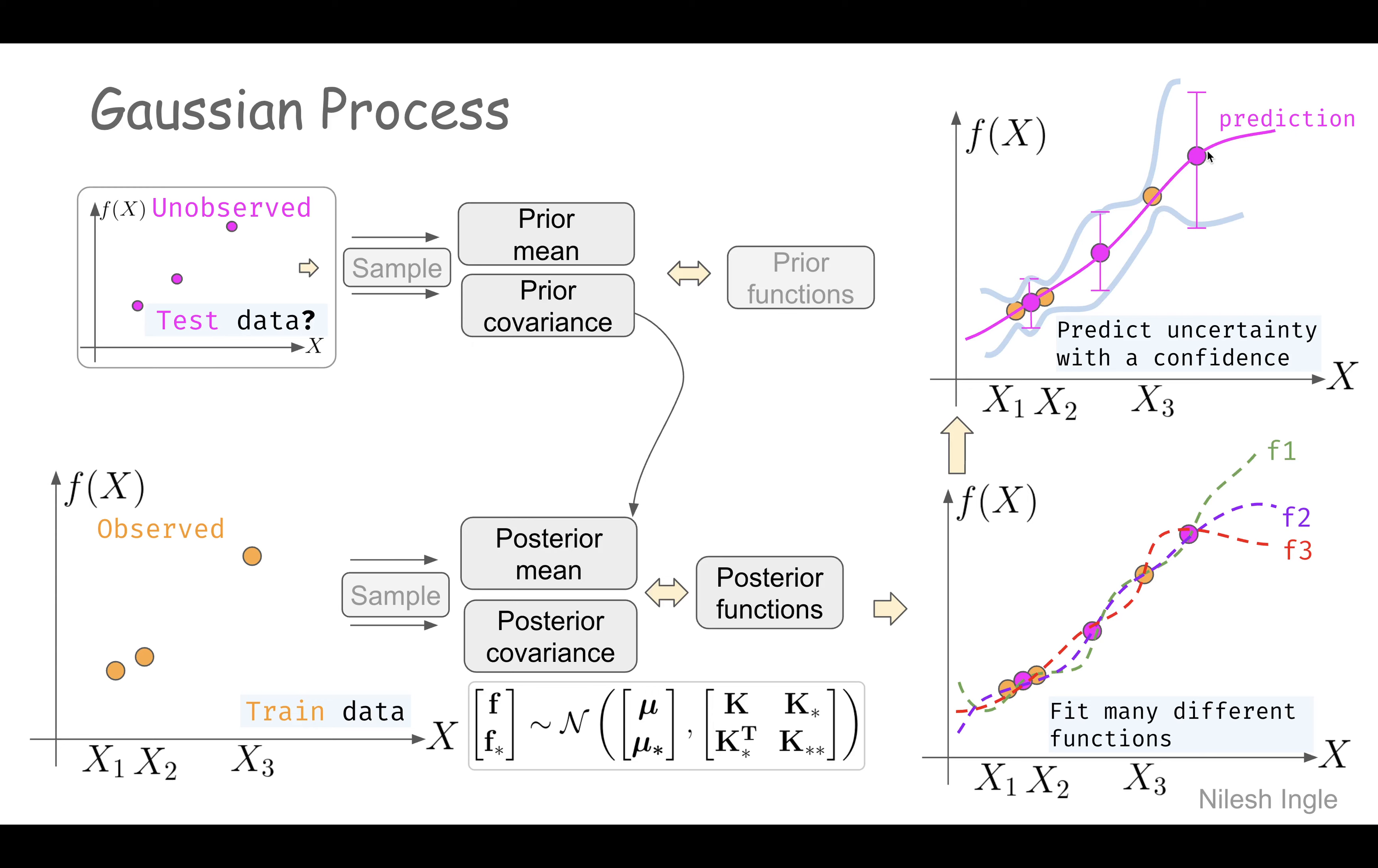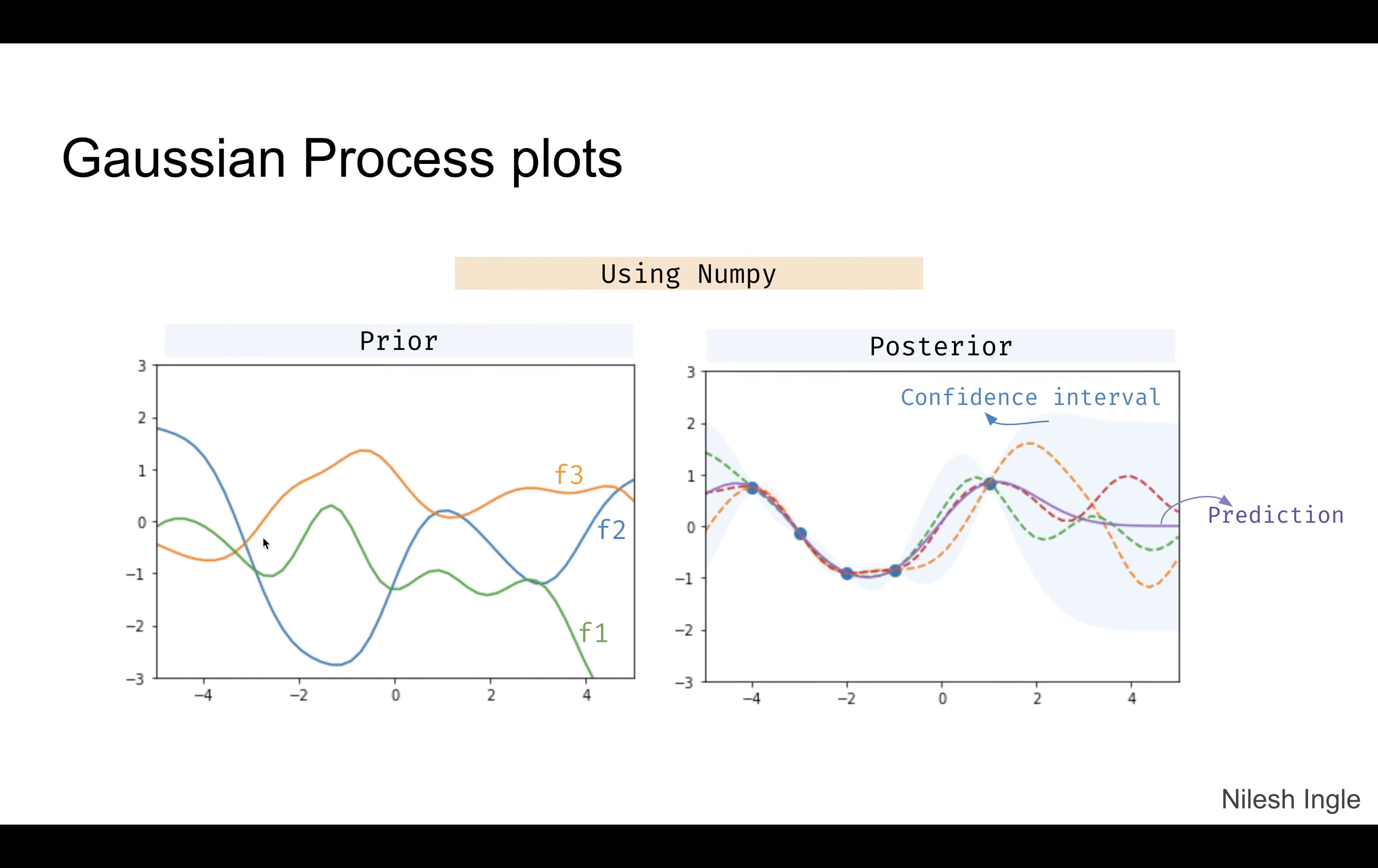When there is no observed data point, the uncertainty is much higher and therefore we have very broad confidence interval regions. Here we have the plot for the prior on left and posterior on the right. On the left we see a lot of wavy functions.